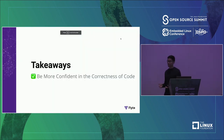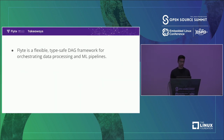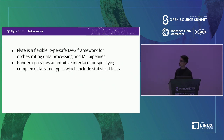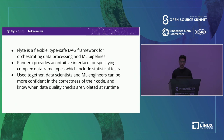So that's really it. Using both these tools you can have type-safe data pipelines and be more confident in the correctness of your code. To summarize: Flyte is a flexible, type-safe DAG framework for orchestrating data processing and machine learning pipelines. Pandera provides an intuitive interface for specifying complex data frame types including statistical tests. Used together, data scientists and ML practitioners can be more confident about their code and catch data quality violations at runtime.